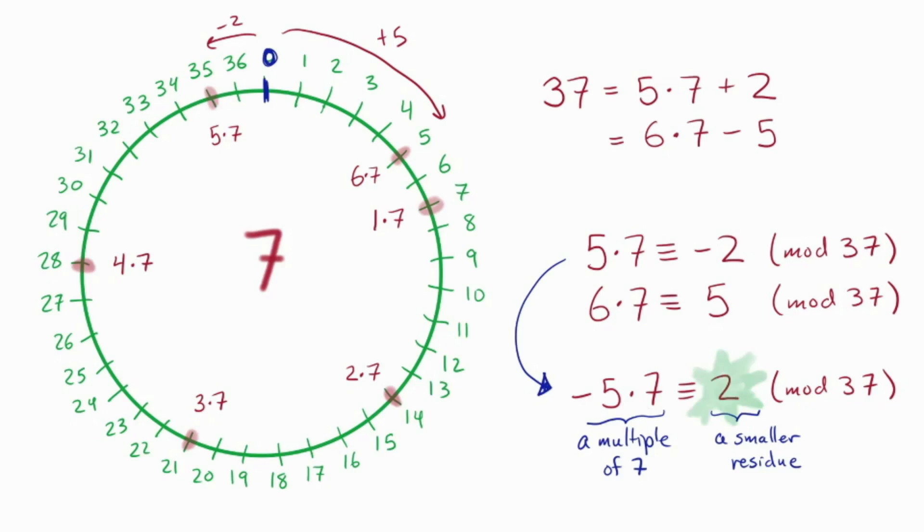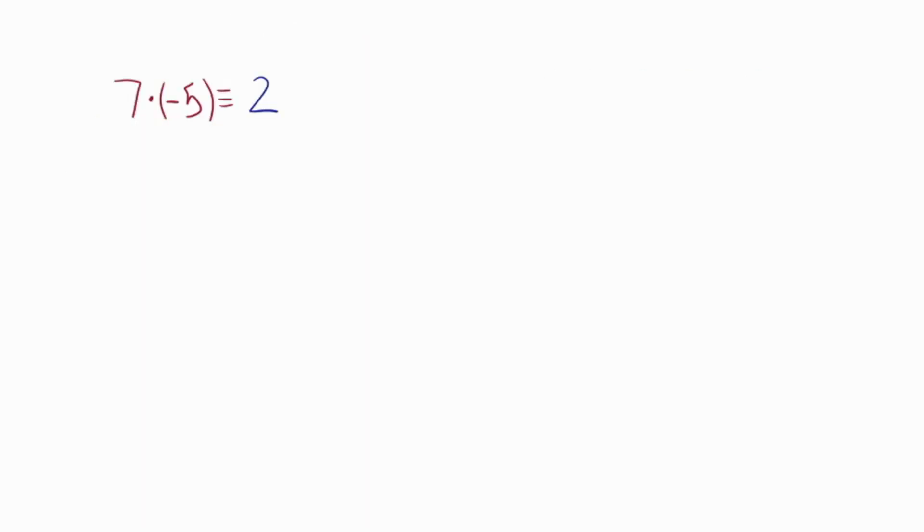Okay, so we haven't found the inverse of 7, but we did find a multiple that gets us closer to 0, which is to say, namely, taking negative 5 sevens gives us 2. Okay, but what good is that? All right, well, here's the trick. What if I just happened to know that the inverse of 2 was 19?